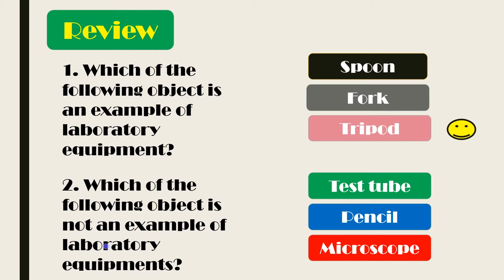Next, which of the following is NOT an example of laboratory equipment or apparatus: test tube, pencil, or microscope? Yes, you are correct — the answer is pencil. Test tube and microscope are examples of laboratory equipment, but even though you can find a pencil in a laboratory, it is not an example of laboratory equipment.